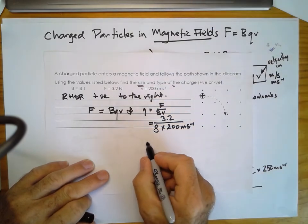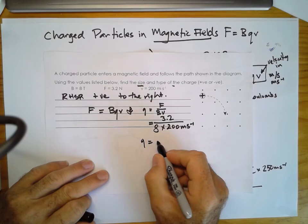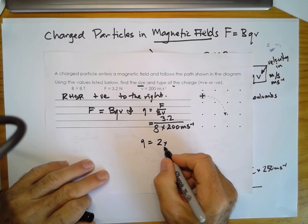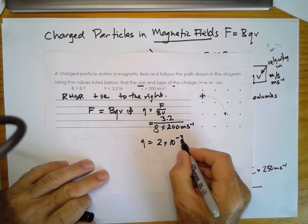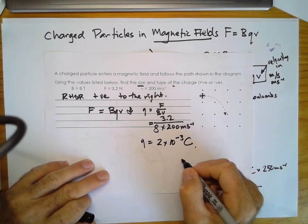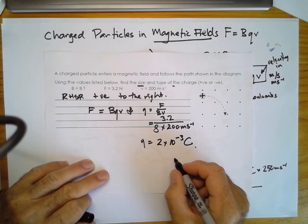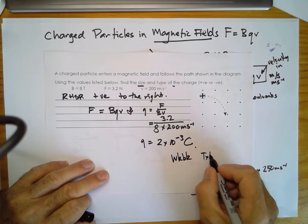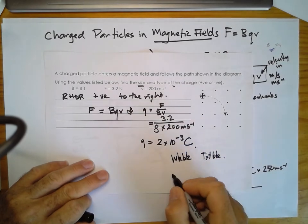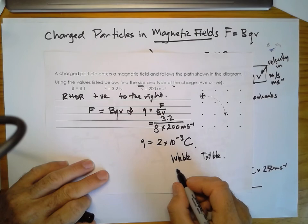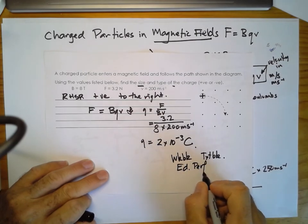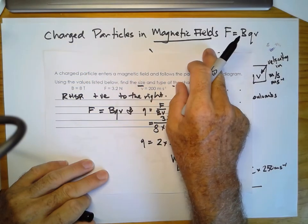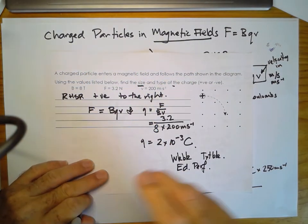That gives us a charge of approximately 2.0 × 10⁻³ Coulombs. After this, you should work through questions in the workbook, textbook, and Education Perfect. That covers charged particles in a magnetic field — next we will be looking at induced currents.